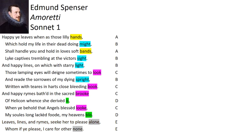Spenser created his own rhyme scheme for his sonnets. The Spenserian sonnet form links the last line of each quatrain with the first line of the next, forming an interlinked ABABBCBCCDCDEE rhyme pattern.